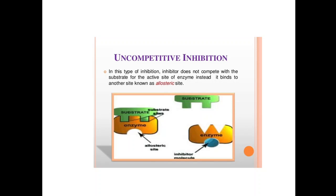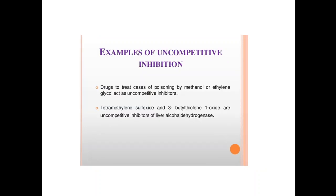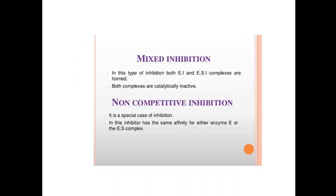Example of uncompetitive inhibition: drugs that treat cases of poisoning by methanol or ethylene glycol act as uncompetitive inhibitors. Tetramethylene sulfoxide and 3-butylthio-1-oxide are uncompetitive inhibitors of liver alcohol dehydrogenase.